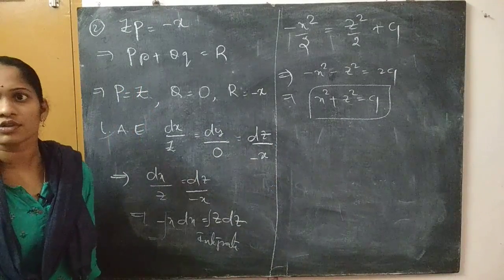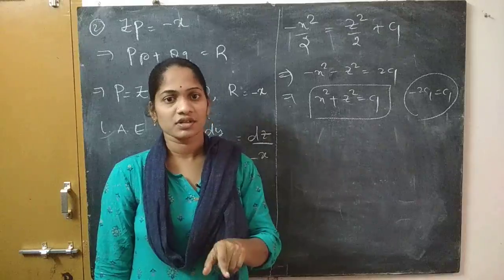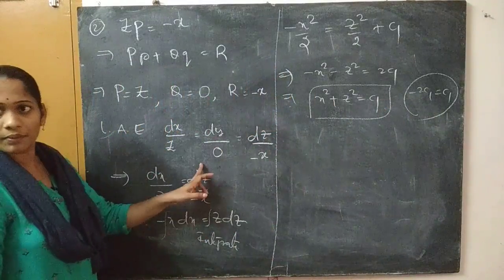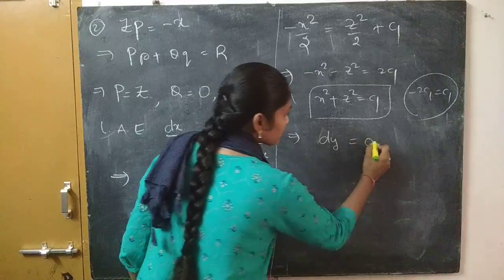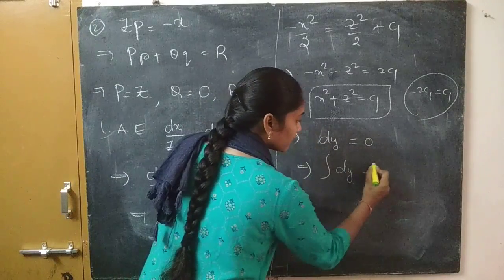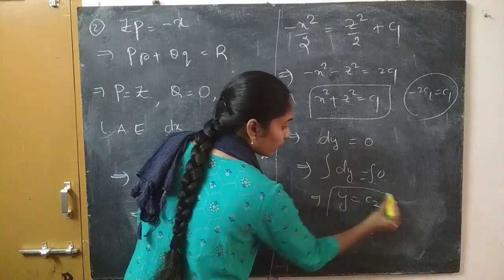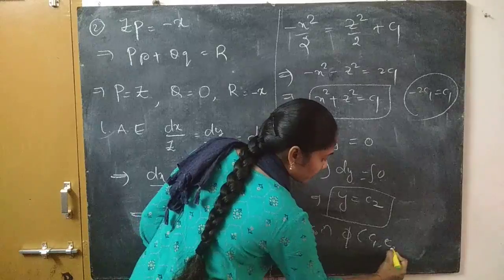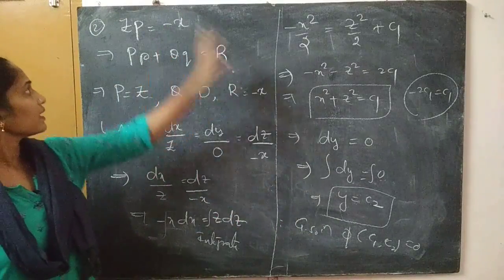Always keep the arbitrary constant positive. So c1 equals x squared plus z squared. Now for the second independent solution, take the fraction dy by 0. Since Q equals 0, directly integrating dy equals 0 gives y equals c2. Therefore, the general solution is phi(c1, c2) equals 0, i.e., phi(x² + z², y) equals 0, which is our required general solution of the given PDE.